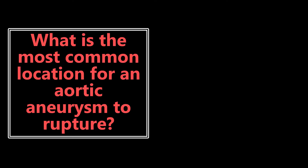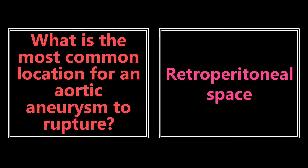What is the most common location for an aortic aneurysm to rupture? Note the wording — this is the most common location for it to rupture within the body, not along the blood vessel itself. The most common location for an aortic aneurysm to rupture is in the retroperitoneal space. Importantly, intraperitoneal rupture is more rapidly fatal, but retroperitoneal rupture is more common.